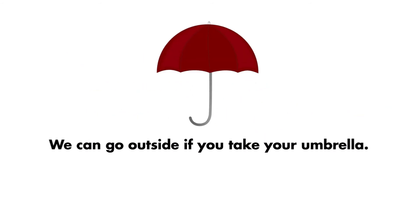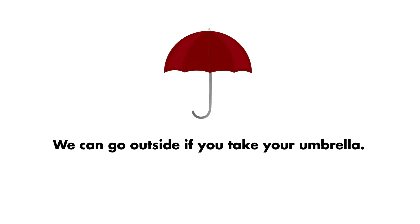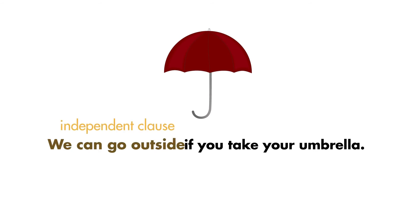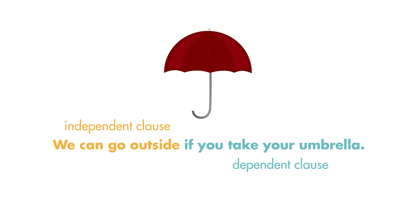Read this sentence. It has one independent clause and one dependent clause: We can go outside if you take your umbrella. We can go outside is an independent clause — it can stand on its own as a complete thought. But if you take your umbrella is a dependent clause. It cannot stand on its own as a complete thought; it relies on the independent clause to make sense.